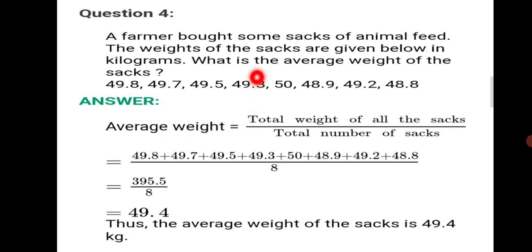Let's write the answer. Average weight. We have to find the average weight. In the question, what is the average weight? So write average weight equals total weight of all the sacks upon total number of sacks. Add all the weights: 49.8 plus 49.7 plus 49.5 plus 49.3 plus 50 plus 48.9 plus 49.2 plus 48.8 upon the total number of sacks is 8. When you add you get 395.5 upon 8. Add carefully, the decimal point should come below the decimal point while adding. When you divide you get your final answer as 49.4. Thus the average weight of the sacks is 49.4 kg.